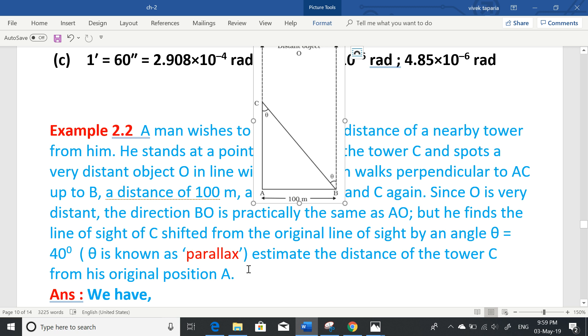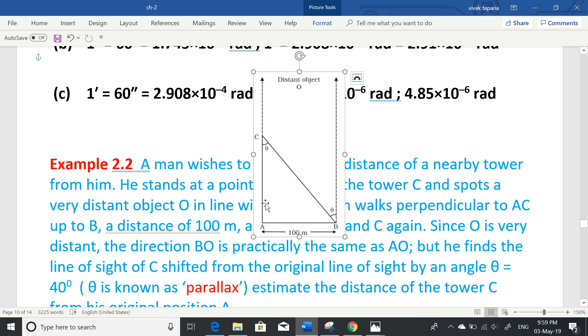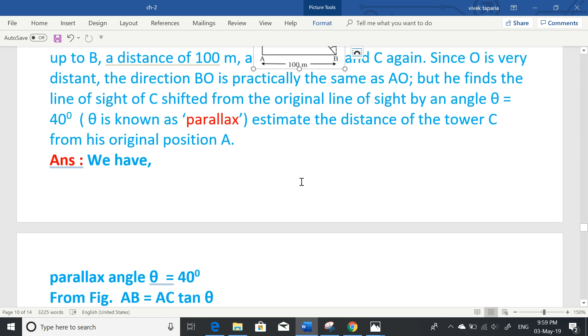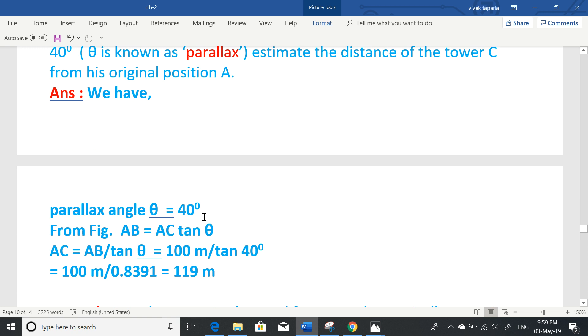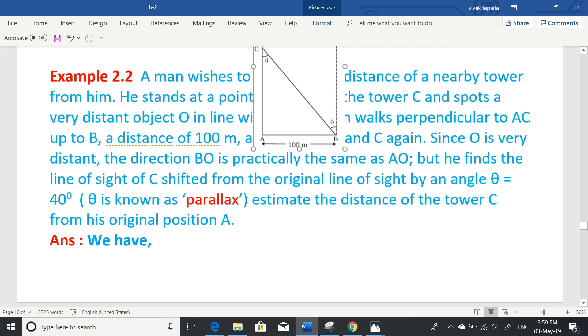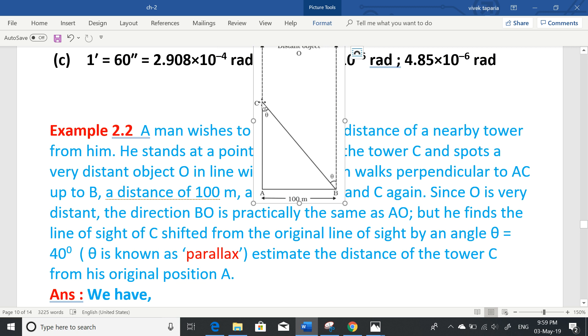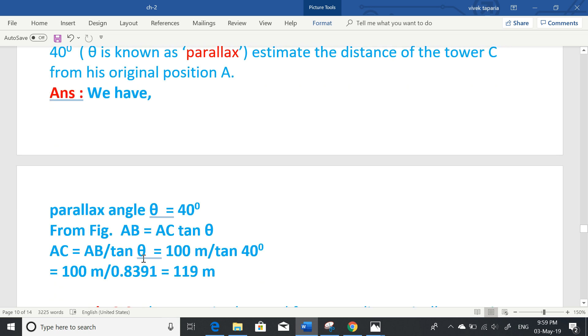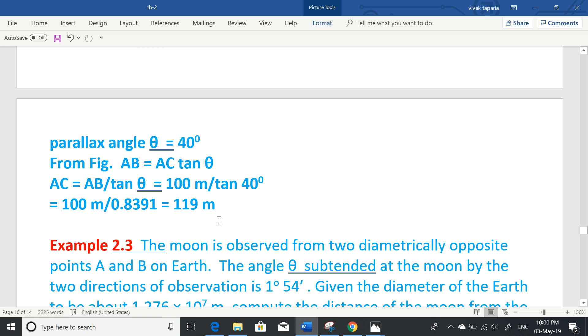To estimate the distance of tower C from his original position A, we need to calculate AC. From the figure, AB is perpendicular to AC, so tan theta equals AB upon AC. Therefore AC equals AB upon tan theta, which equals 100 meters divided by tan 40 degrees. Looking up the value in trigonometric tables, tan 40 degrees equals 0.8391, giving us AC equals 119 meters.